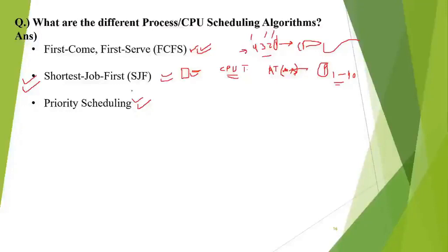In non-preemptive Shortest Job First, even if an incoming process has a shorter time requirement, the currently running process will not give up the CPU. Once the process is given the CPU, it cannot be snatched.